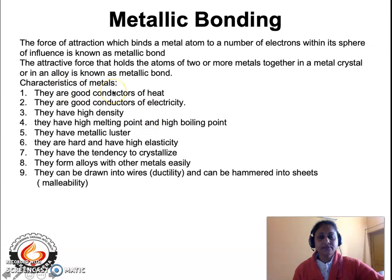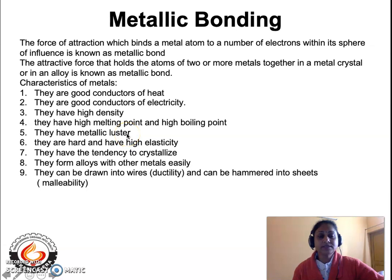What are the characteristics of metals? We know that all metals are good conductors of heat and electricity. They are hard and they have high melting point and high boiling point. They have high density. They have a metallic luster, that means there is a shine on the surface of all metals. They have high elasticity, they have the tendency to crystallize, and they also have the tendency to form alloys with other metals.